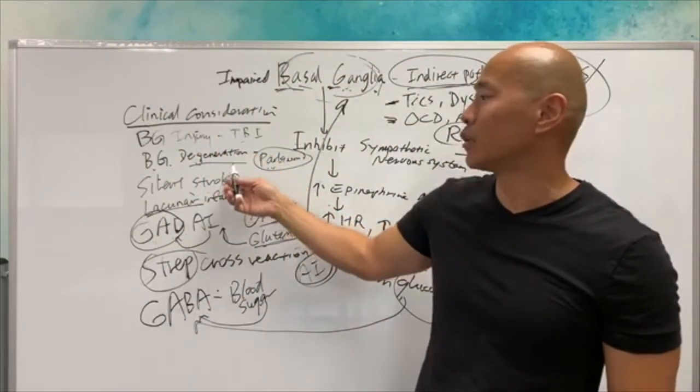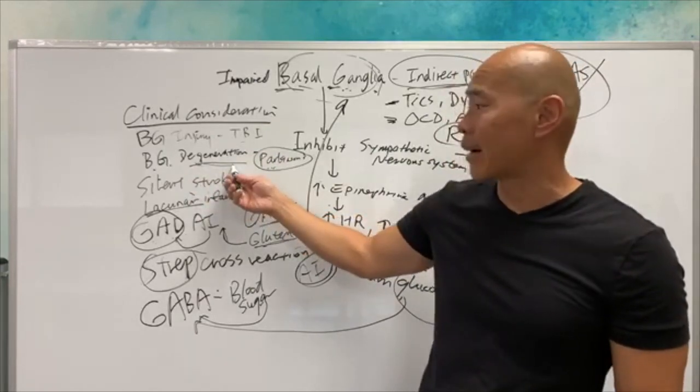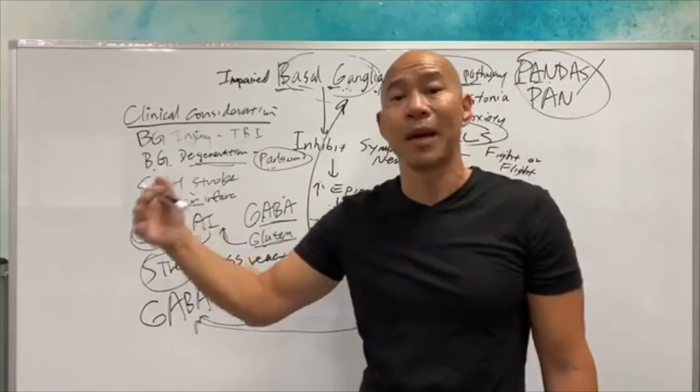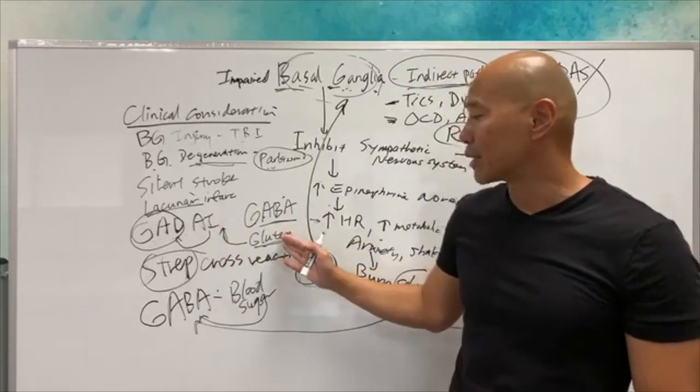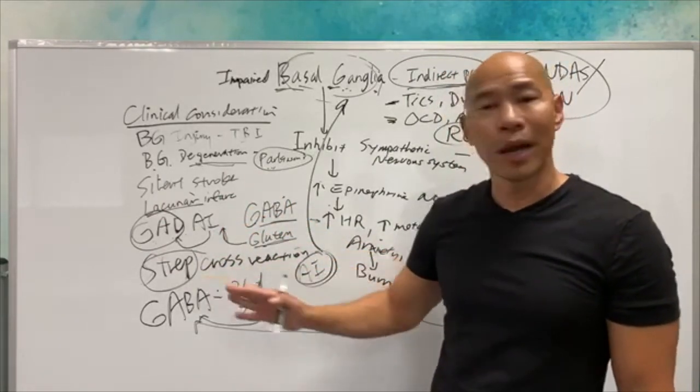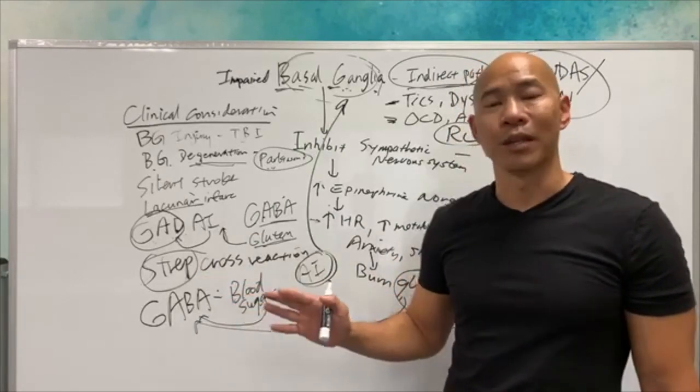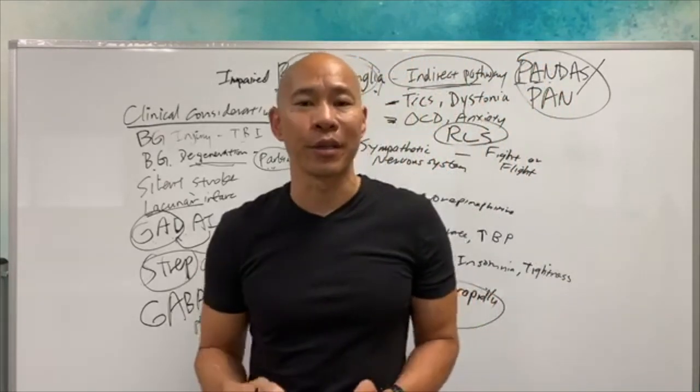Then we have to look at these clinical considerations. Did you have previous injury? Do you have some degeneration in the area due to toxins, due to heavy metals? Do you have any previous history of silent strokes? Do you have autoimmunity? Perhaps gluten sensitivity? Have you ever had strep? Do you have any blood sugar issue? And so on and so forth. So this is how we figure things out.